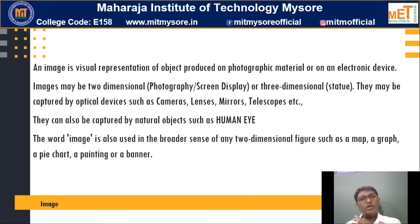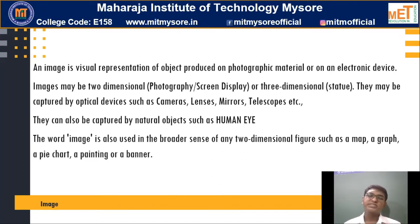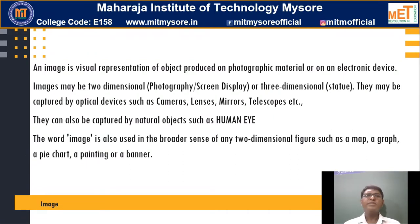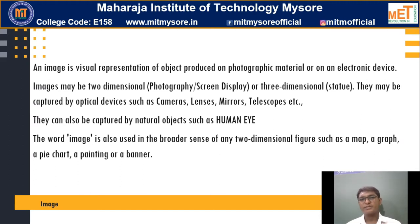Images are usually of two types: analog images and digital images. Analog images are of less interest to us, so we will directly go to digital images.